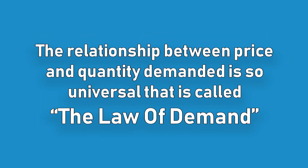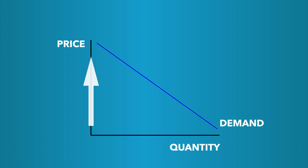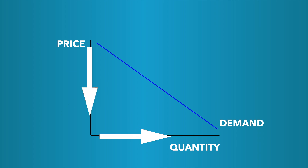The relationship between price and quantity is so universal that it is called the law of demand. This law states that when the price of a good rises, the quantity demanded falls. And when the price falls, the quantity demanded rises.